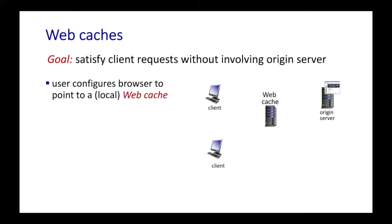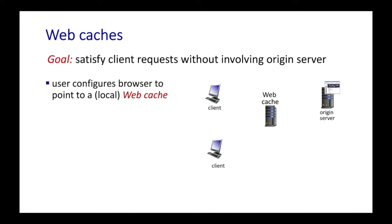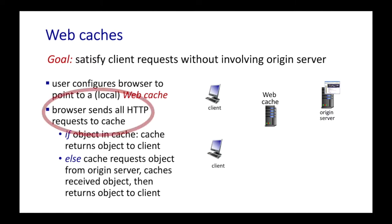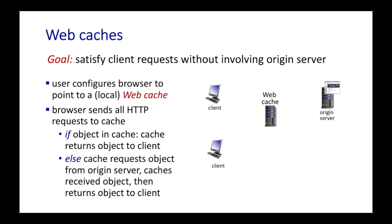An institution installs a web cache and users configure their browsers to point to this local web cache. Whenever a browser wants to make a request to an origin server, it first sends its HTTP request to the cache. If the object requested is found in the cache, the cache will return the object directly to the client — the origin server is not even involved. Otherwise, the cache requests the object from the origin server, caches the received object, and then returns it to the client.